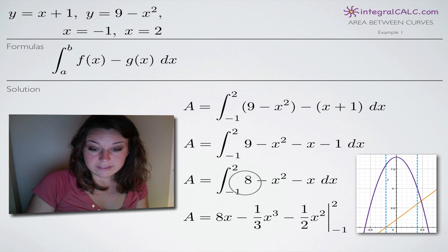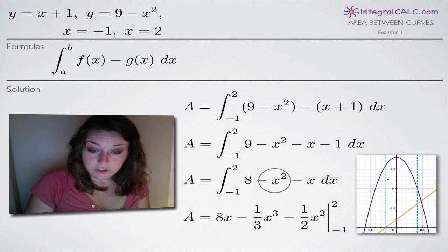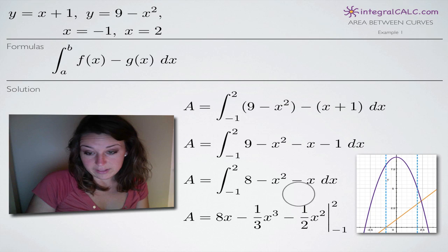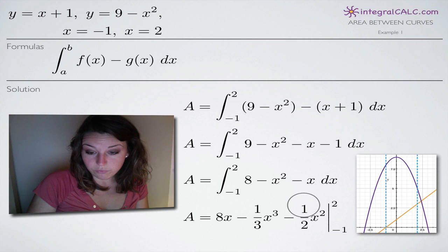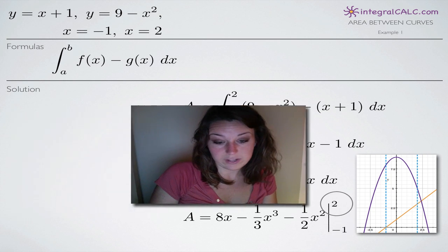When we take the integral of this first term here, 8, we'll get 8x. Taking the integral of negative x squared, we add 1 to the exponent to get 3 and then we divide the coefficient which is the 1 by the new exponent, 3. And same here with this x term. We add 1 to the exponent, 1 plus 1 gives us 2, and we divide our coefficient 1 by our new exponent which is 2, and then we're going to be evaluating between negative 1 and 2.